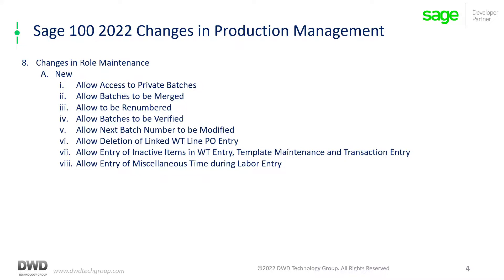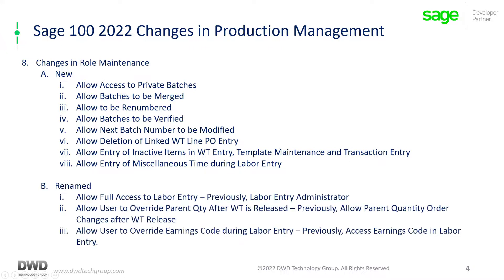In changes to role maintenance, in their effort to standardize the different modules, they added different security features in the roles. Some were renamed: 'Allow full access to labor entry' was previously 'Labor entry administrator.' 'Allow user to overwrite parent quantity after work ticket is released' was previously 'Allow parent quantity order changes after work ticket release.' And 'Allow user to overwrite earnings code during labor entry' was previously 'Access earnings code in labor entry.'